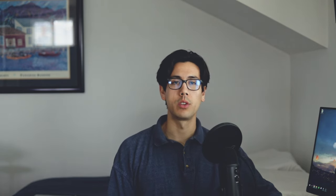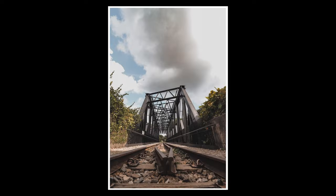The sixth technique is to use triangle and diagonal lines. This technique involves the use of diagonal lines and triangular shapes to lead the viewer's eyes toward a particular point in the image. Similar to leading lines, the point where the lines meet should be the point of emphasis. For example, in this image, there are triangles that all meet at the point of emphasis.